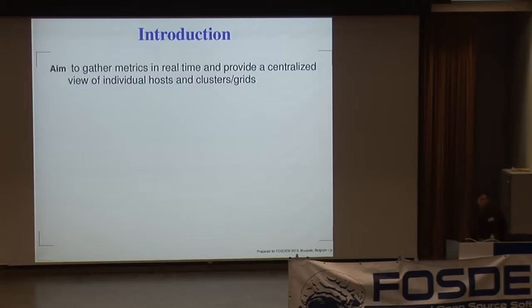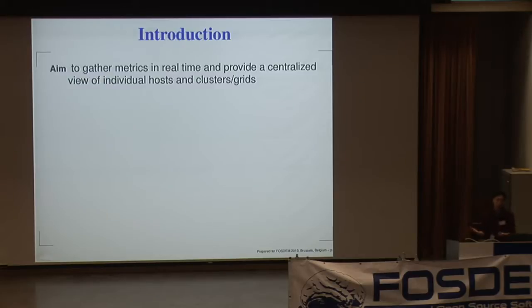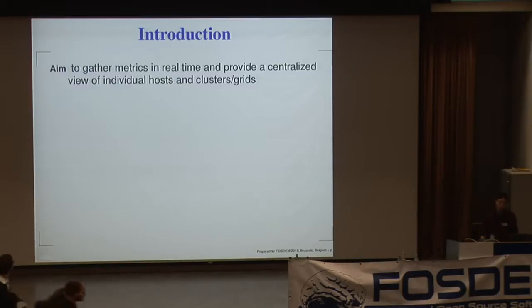So what is Ganglia? The goal of the software is to gather system resource metrics in real time so that you can figure out what your hosts are doing. Whether you have one host or hundreds to thousands of computers, you set them up and they're running, but you want to find out what the system resources are like. When you have a large system, you want software that gives you a centralized view of what's going on. That's Ganglia's goal.